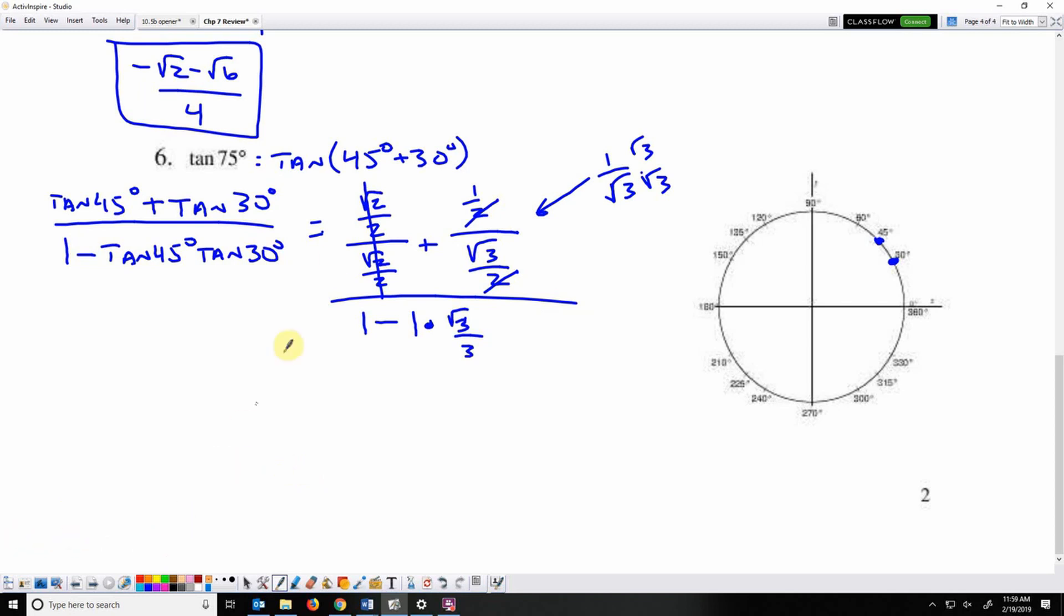So a more simplified version of this entire thing is 1 plus root 3 over 3 over 1 minus root 3 over 3.